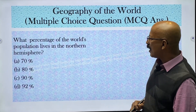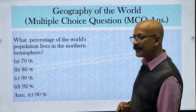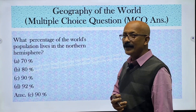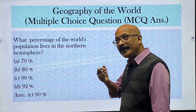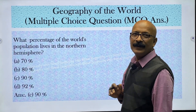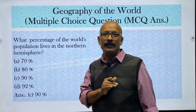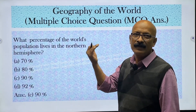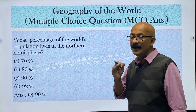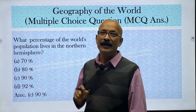What percentage of the world's population lives in the northern hemisphere? Options are 70, 80, 90, and 92 percent. The answer is 90 percent — 90% of the total population of the world is settled in the northern hemisphere. The Equator is the imaginary line that divides the world into two hemispheres. The part from the Equator towards 90 degrees north is the Northern Hemisphere, and 90% of the population lives there.